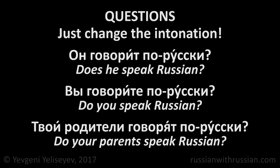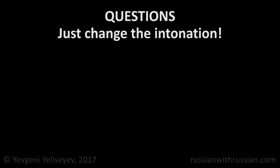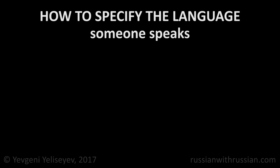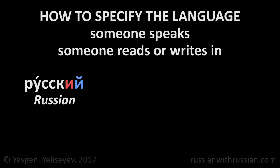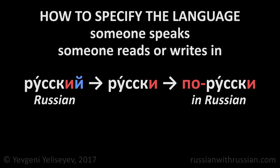Now let's talk about how we can denote the language that someone speaks, reads, or writes in. To do it, remove the final И-краткое from the adjective specifying the language — for example, русский becomes русски — then add the prefix по-. So русский becomes по-русски.